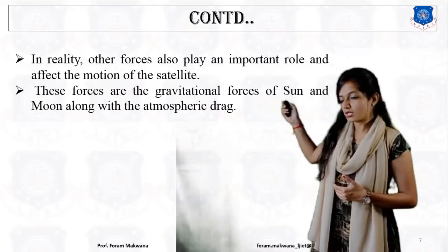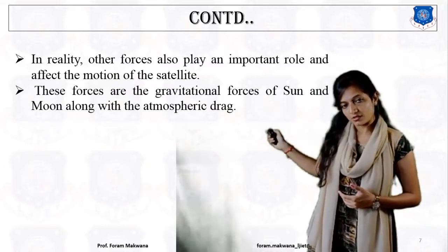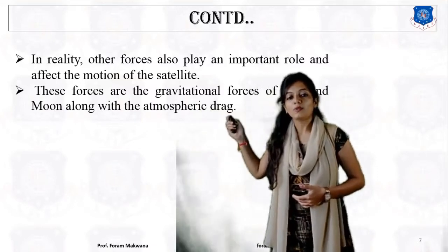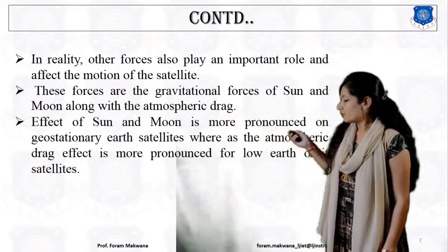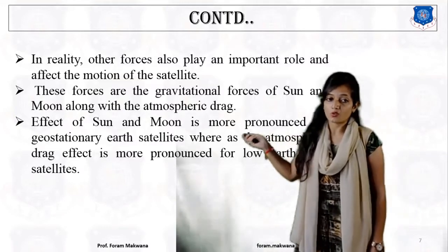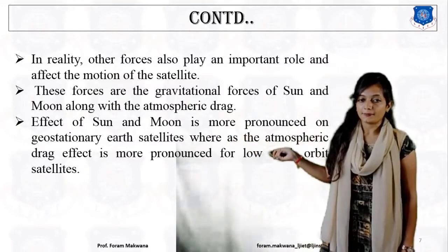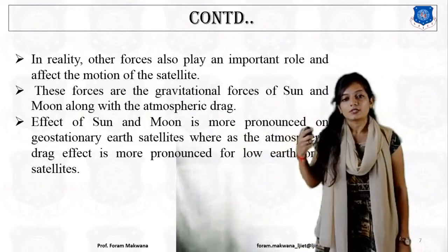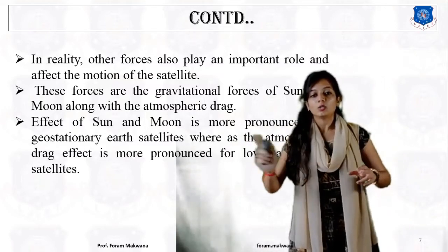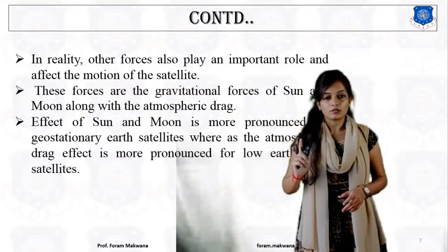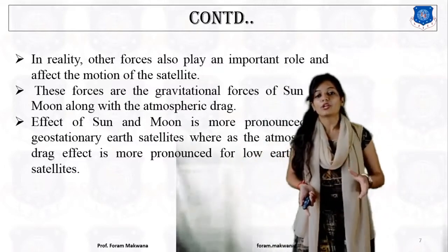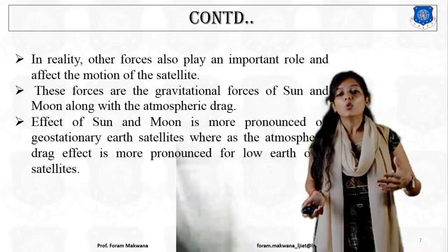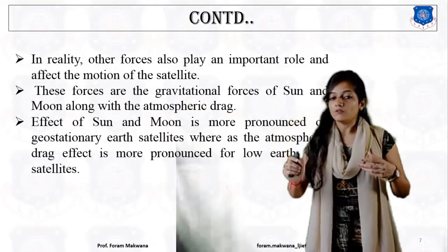These forces include the gravitational force of the sun and moon along with atmospheric drag. The effect of the gravitational force of the sun and moon is more pronounced on geostationary earth satellites because they orbit approximately on the equatorial plane. Whereas the atmospheric drag effect is more pronounced on the low earth orbit, as it is the only orbit nearest to the surface of the earth.